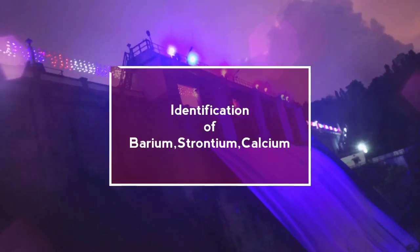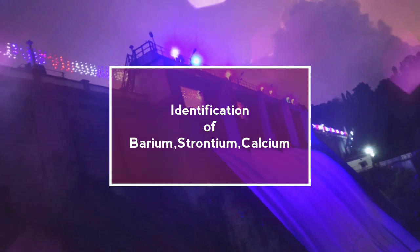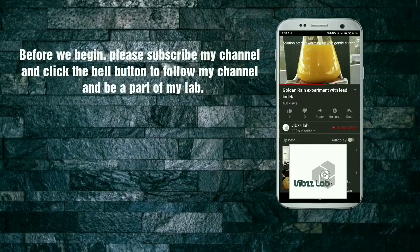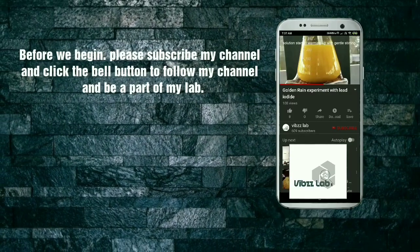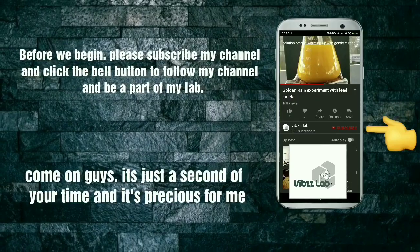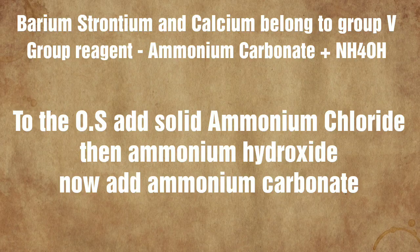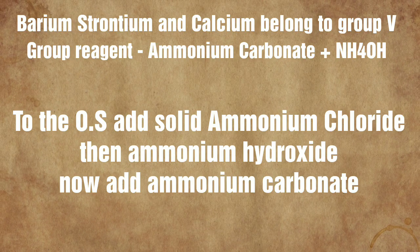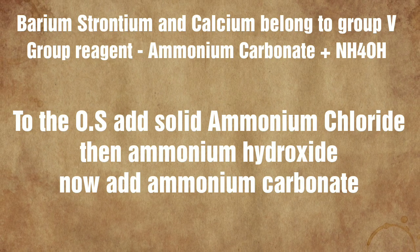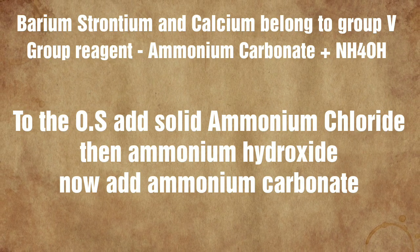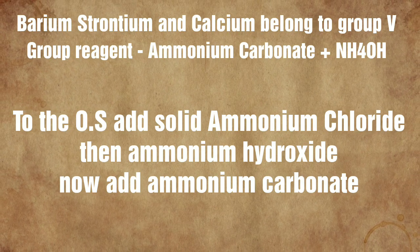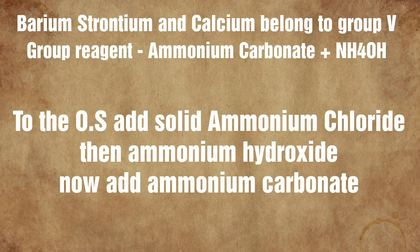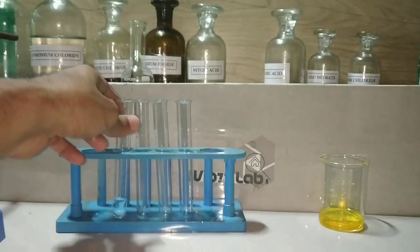Today we will be doing the identification of Group 5 cations. Barium, strontium, and calcium belong to Group 5, and the group reagent is ammonium carbonate with ammonium hydroxide.